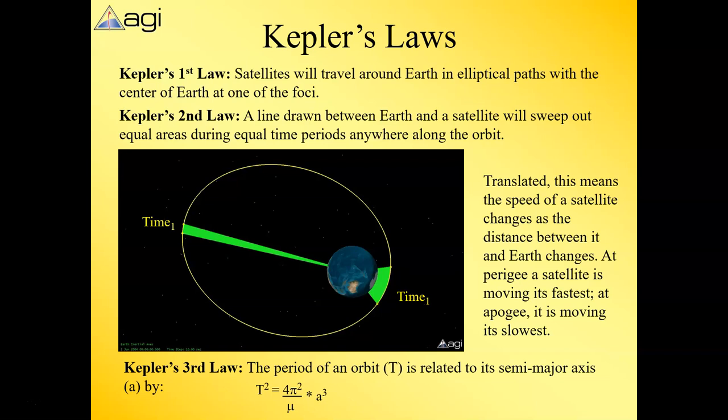Finally, his third law—we've already kind of hinted at this when we looked at the time period, which totally relates to only the semi-major axis. What he figured out was the square of the time is proportional to the cube of the semi-major axis. That's how we can figure out the period, or if we know the period, we can figure out what the semi-major axis is.